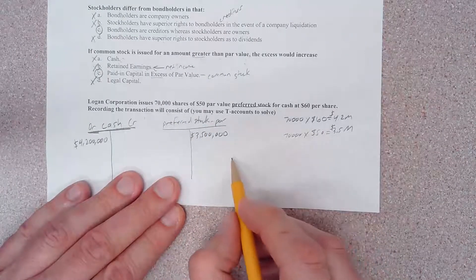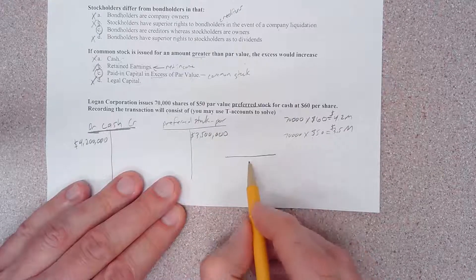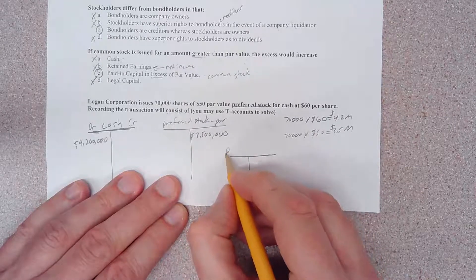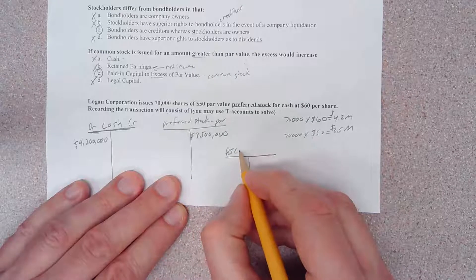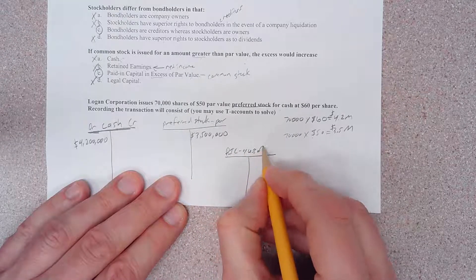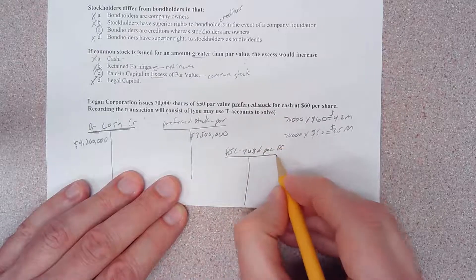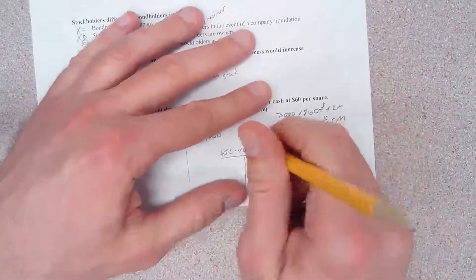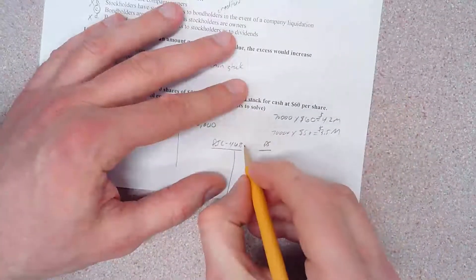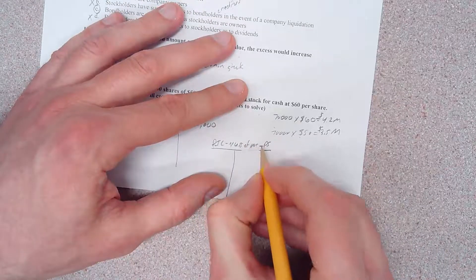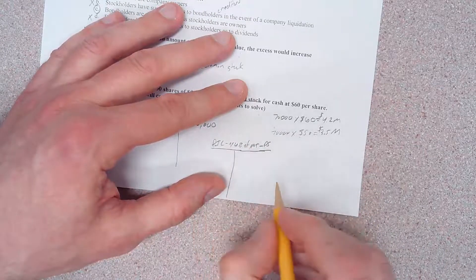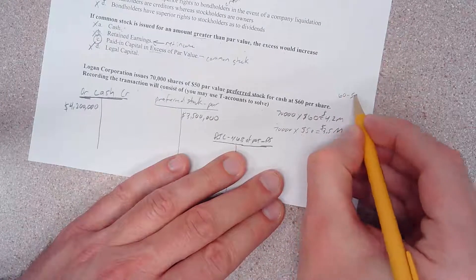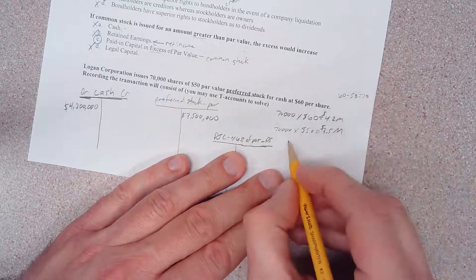Because as I just told you, paid-in capital stock accounts have normal credit balances. And let's see here, I'm going to drop this down a little bit. We're going to have - I'm going to abbreviate - paid in capital excess of par, preferred stock. So we've got to take the $60 minus $50, and that gives us $10.